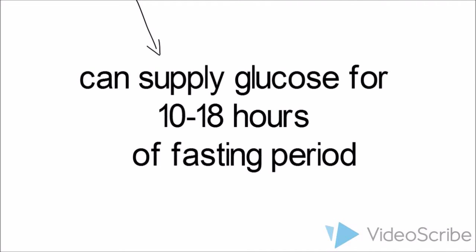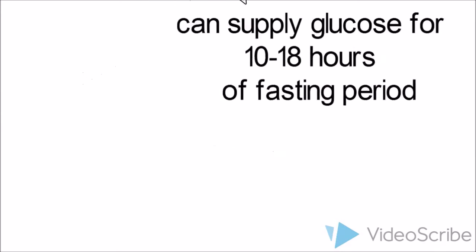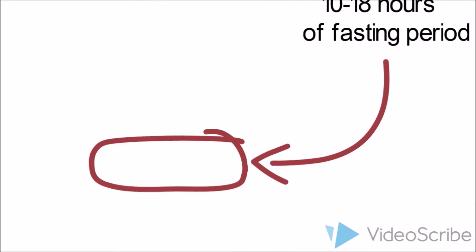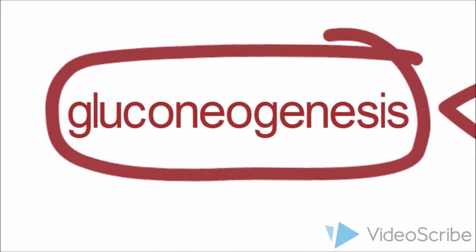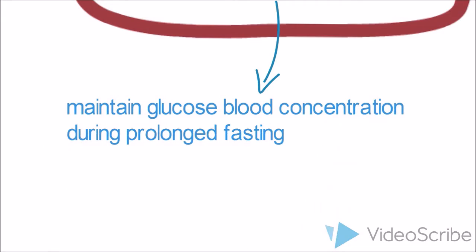If I didn't eat anything, from 10 to 18 hours I can get glucose from glycogen. But after that, where do I get glucose? This is where gluconeogenesis comes in. Gluconeogenesis maintains blood glucose concentration during prolonged fasting.